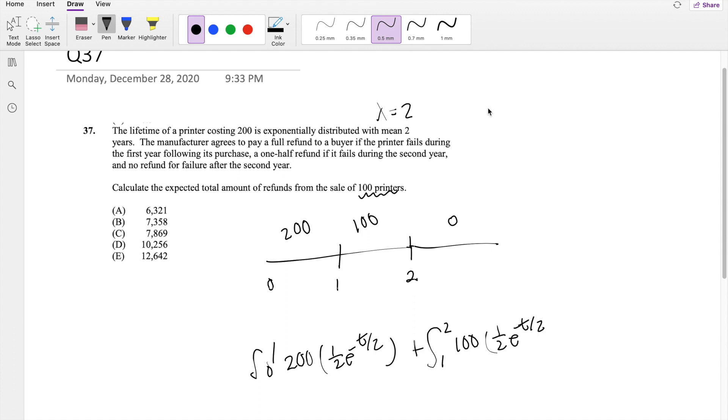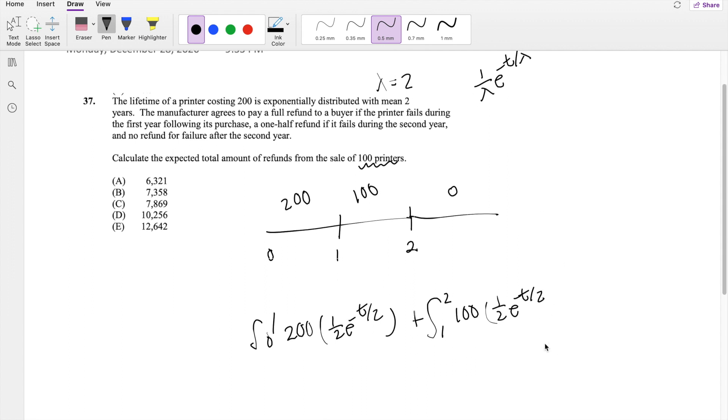This is just something we need to know. 1 over lambda e to the negative t over lambda is the distribution function for exponential distribution. So definitely memorize that one if you don't have it memorized already.